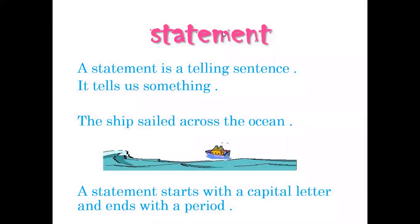Here we have the first kind of sentences. It's a statement. What's the meaning of statement? The statement is a telling sentence. It tells us something. Like when we say, for example, the bear likes to eat honey. The horse is brown. So when the sentence tells something or gives information, it's a statement. Like the girl has long hair, the boy is smart, or the boy has a big house. So when the sentence tells us something, it is a statement.